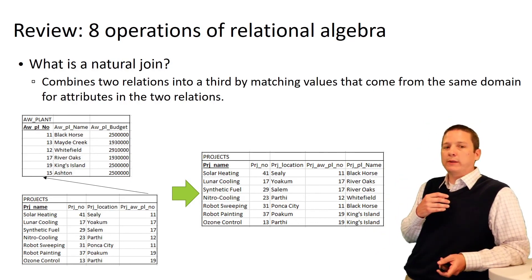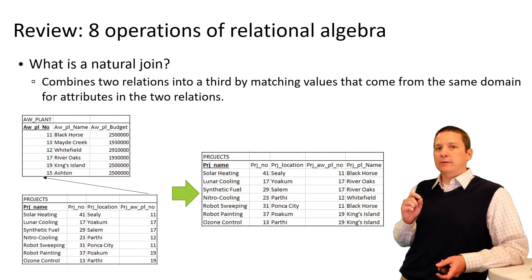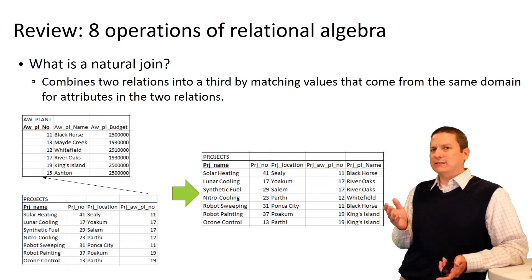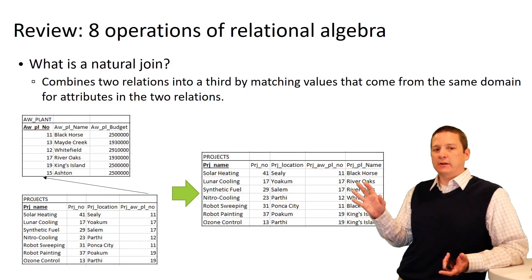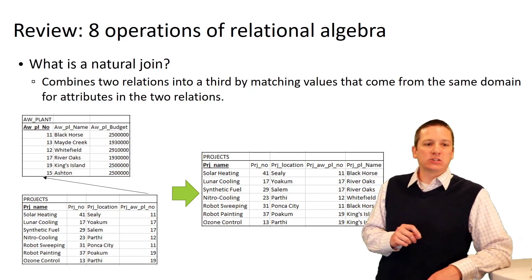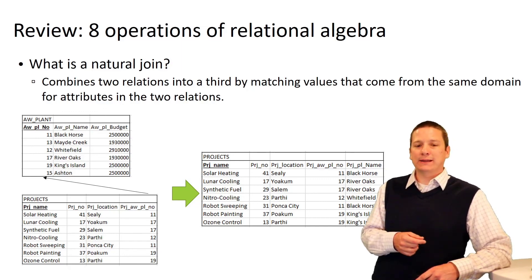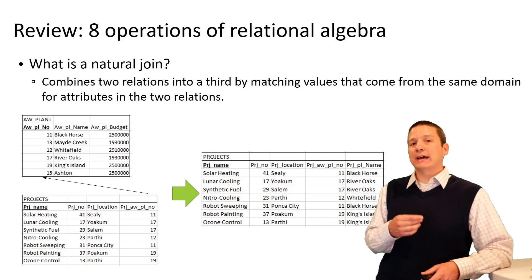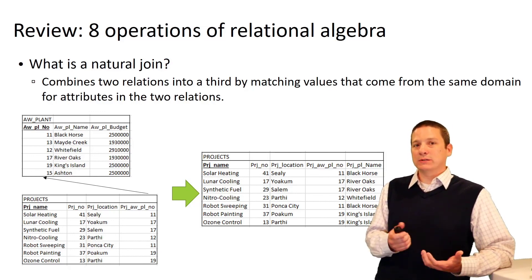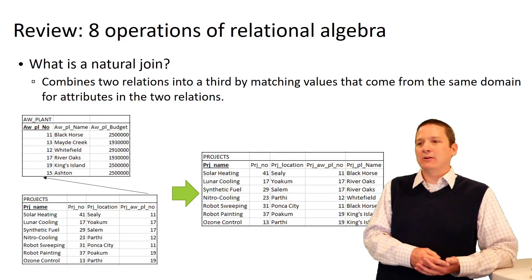We also looked at join operations, where we take two dissimilar relations and create a new relation based on values of two attributes being equal to one another — essentially what happens in a foreign key relationship. We created a new relation by joining on the AW plant number attribute in the projects table being equal to the AW plant number attribute in the AW plant table, resulting in a new relation with attributes from both tables. Joins are something we'll work with a lot in the second half of the semester as we get into SQL.